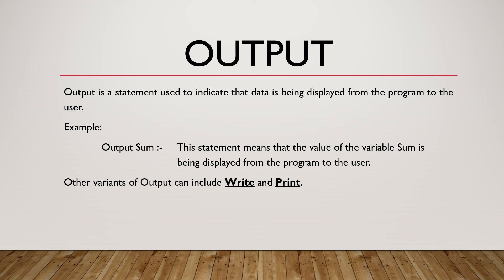Output is a statement used to indicate that data is being displayed from the program to the user. Example: output sum. This statement means that the value of the variable sum is being displayed from the program to the user. Other variants of output can include write and print.